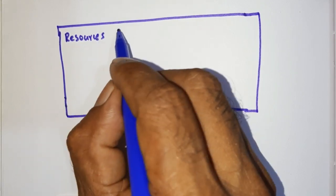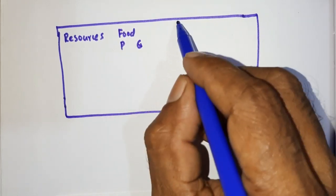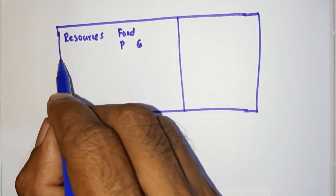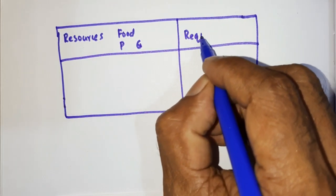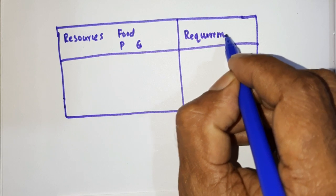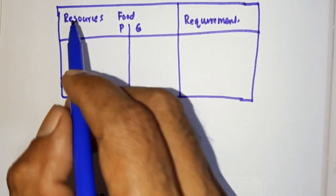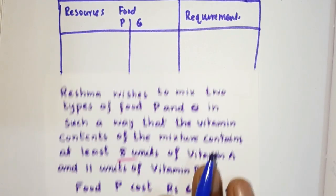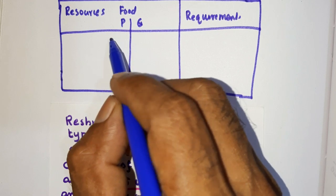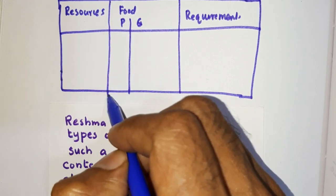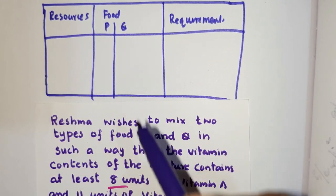We have a table showing resources and requirements. Food P and Q are two different foods whose nutritional contents need to meet the given requirements.